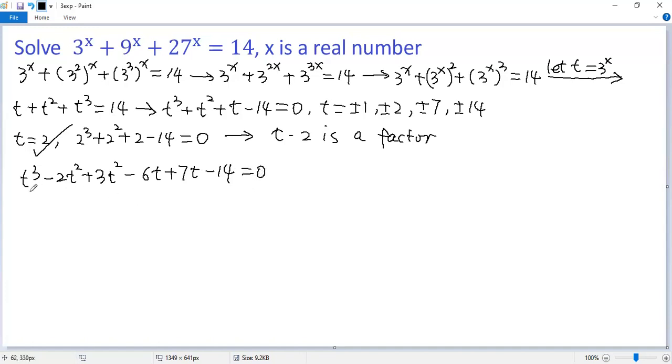You will see the reason. From these two terms, we take the greatest common factor t squared out, so we get t squared times t minus 2. For the second two terms, we take 3t out, so we get t minus 2. For the last two terms, we take 7 out, so we still get t minus 2 equals 0.